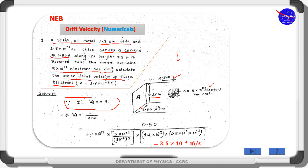Substituting the values: current i = 0.50 amperes, e = 1.6 × 10⁻¹⁹ coulombs, and n = 5 × 10²² electrons per cm³. Since this is in CGS units, we must convert to SI units by dividing by 10⁻² (since 1 centimeter = 10⁻² meters).